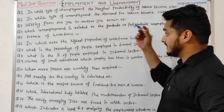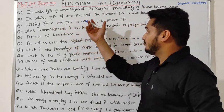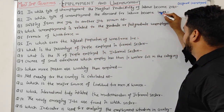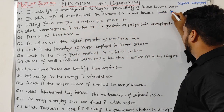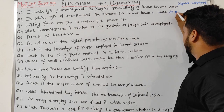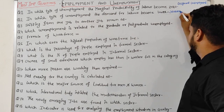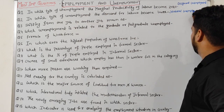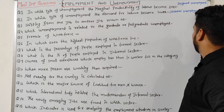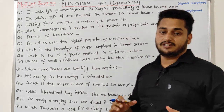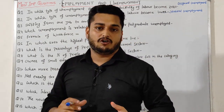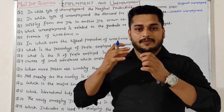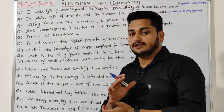Question 2: In which type of unemployment does the demand for labor become lower? The correct answer is seasonal unemployment. In this situation, people are unemployed for a few months in a year — in those months, the demand for labor becomes lower.